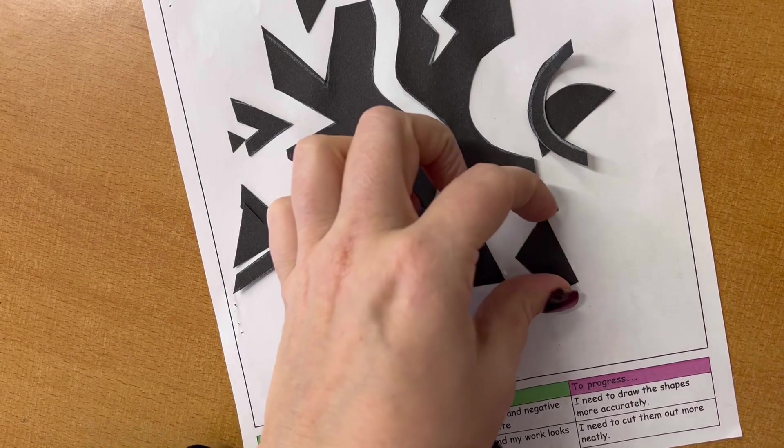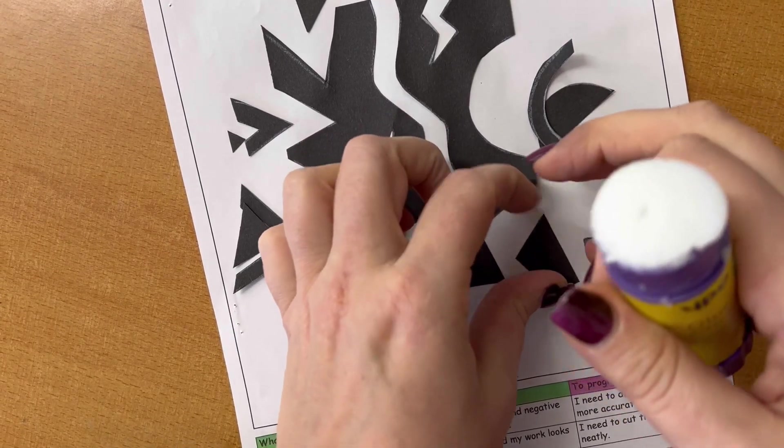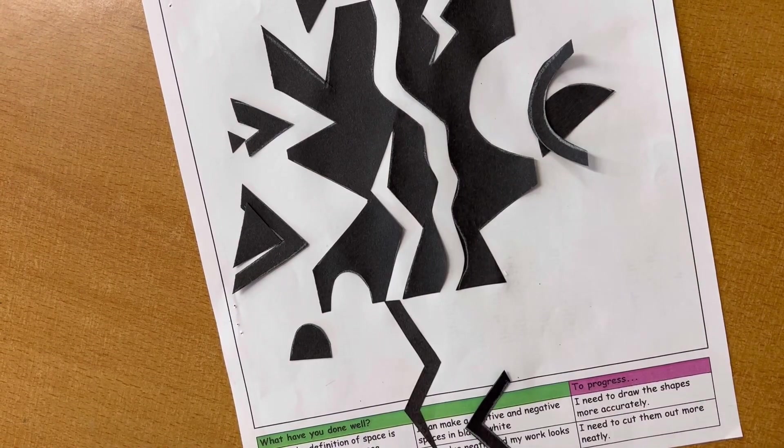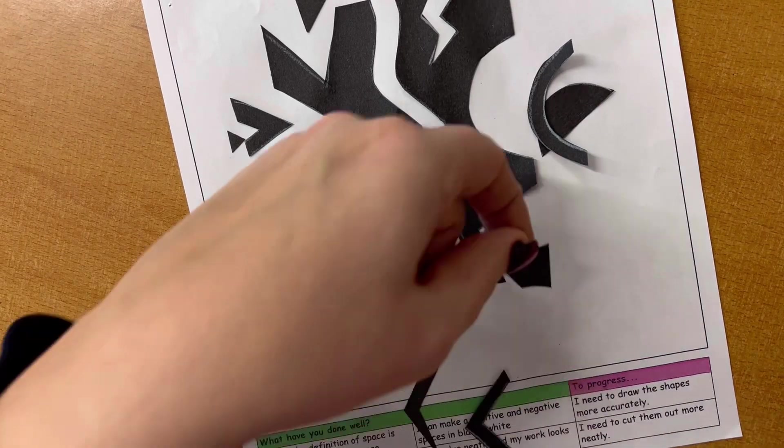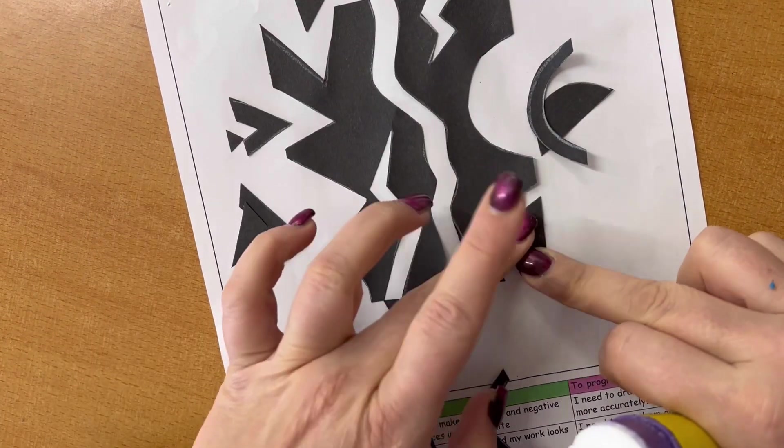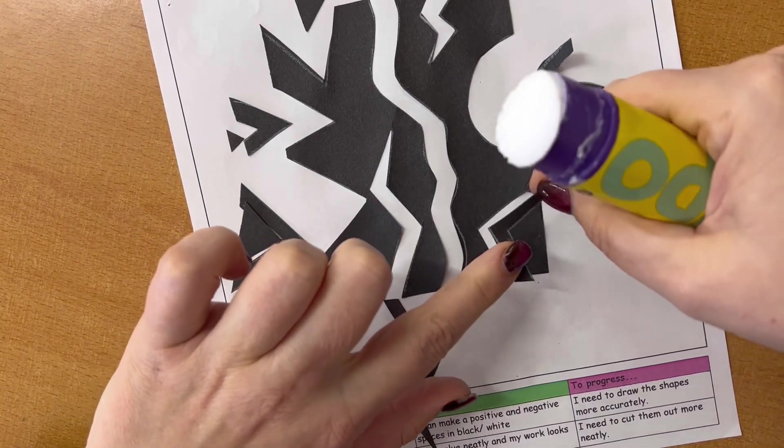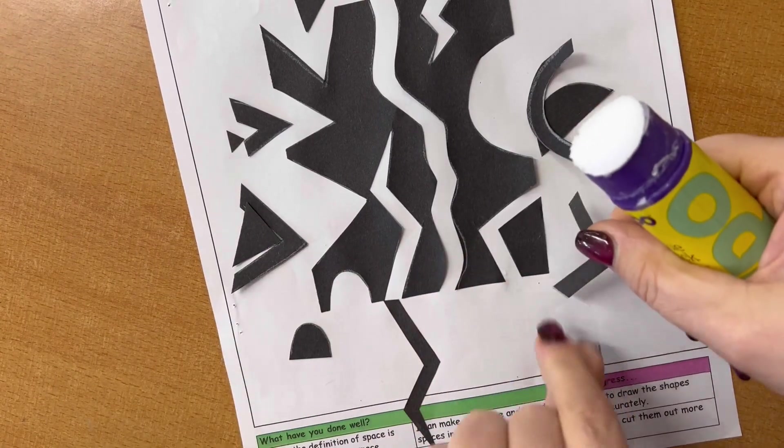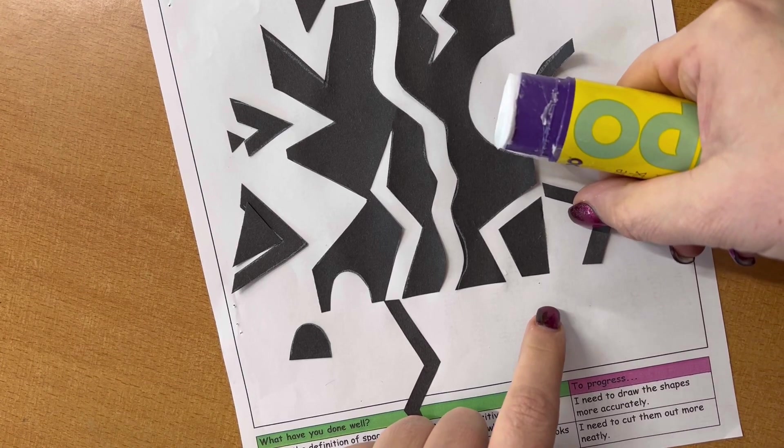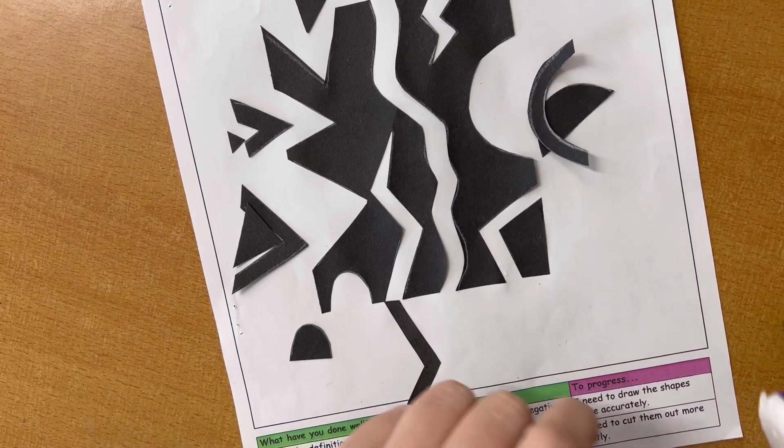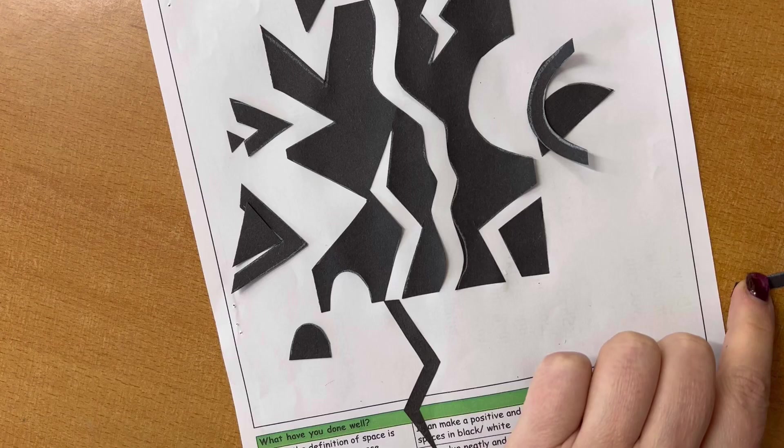So it might take a moment for you just to think about the positive and negative spaces. That is what is going to be confusing doing this piece of work. So you've got to turn it upside down and then work out how it's going to go down.